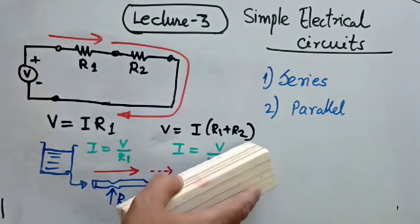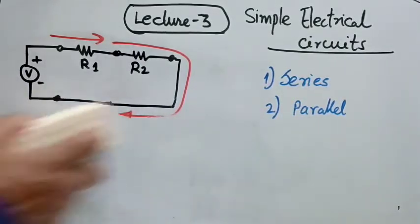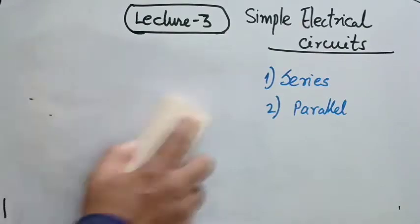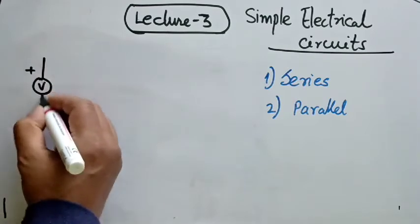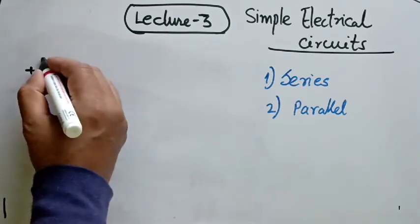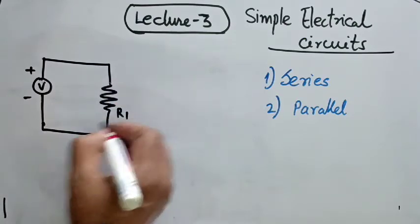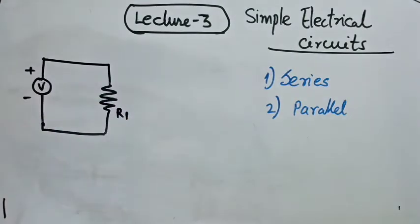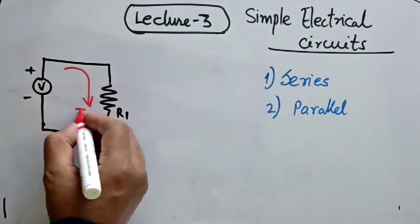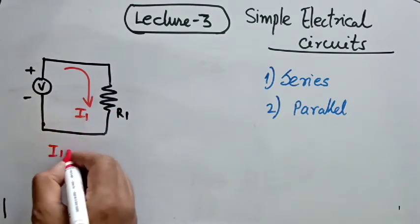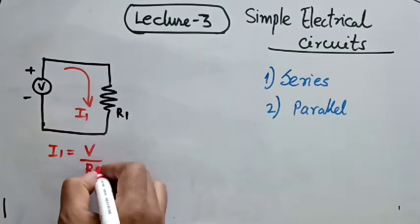Now let us try explaining this same circuit diagram with a parallel combination of resistances. We have the same voltage source V which is connected to R1. The current that flows through this line is basically I1. So I1 is voltage V divided by R1.